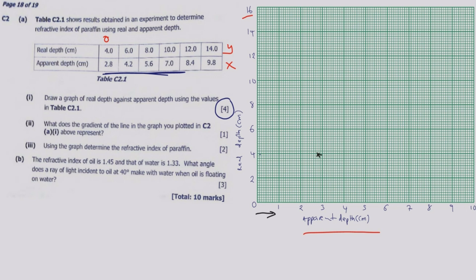The next point is (4.2, 6): go along 6 on the y-axis, then 4.2 is just two points above 4. Then (5.6, 8): go along 8 then find 5.6. Then along 10 we go and look for 7, somewhere here. Then (8.4, 12): along 12, comma 8.4. Finally (9.8, 14): along 14 then go to 9.8, which is just two points before 10.